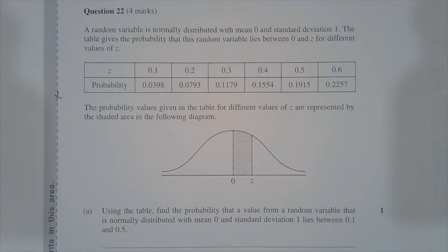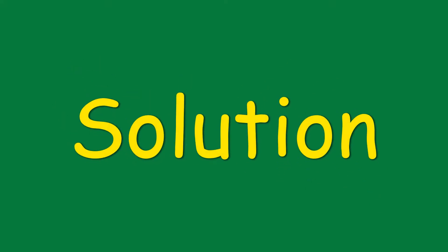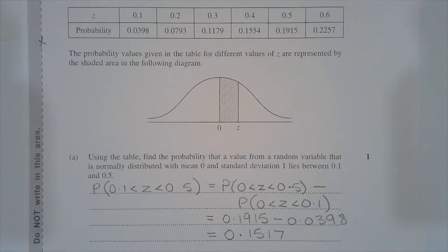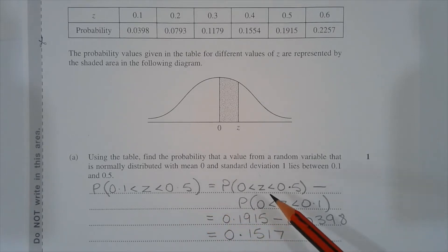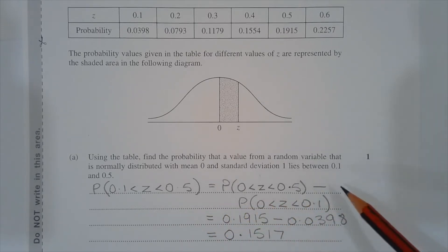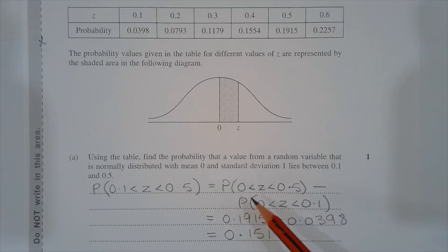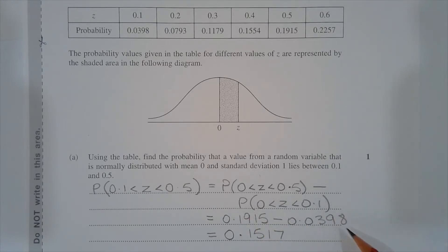Part A. Using the table, find the probability that a value from a random variable normally distributed with mean 0 and standard deviation 1 lies between 0.1 and 0.5. The probability that z lies between 0.1 and 0.5 equals the probability that z lies between 0 and 0.5 minus the probability that z lies between 0 and 0.1. From the table, that's 0.1915 minus 0.0398, which equals 0.1517.